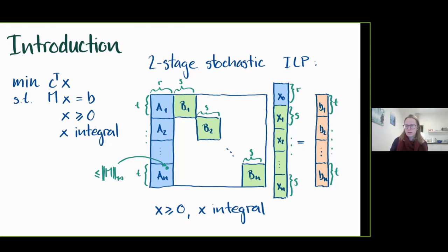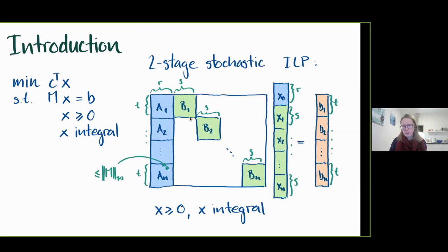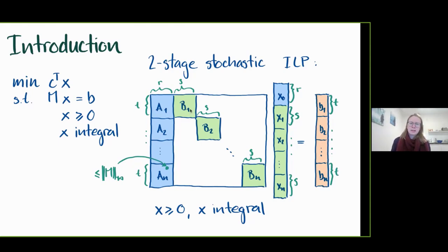We also split the target vector into blocks. For multi-stage stochastic LPs, the blocks B_i are not small blocks but recursively have the same structure again — some more global variables and the rest split into local variables. In this talk I will mostly focus on the two-stage stochastic integer program because the key ideas are the same but without the recursive structure.